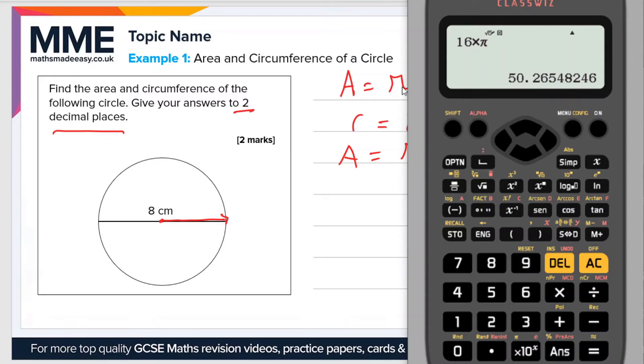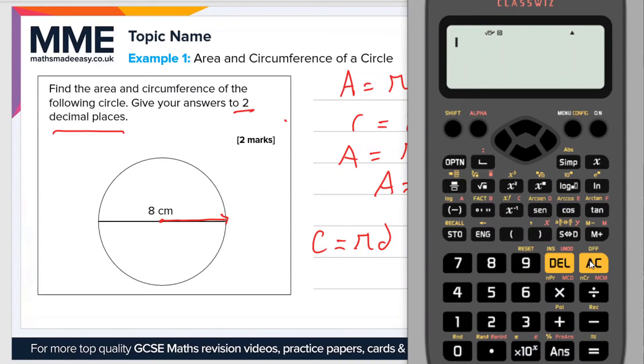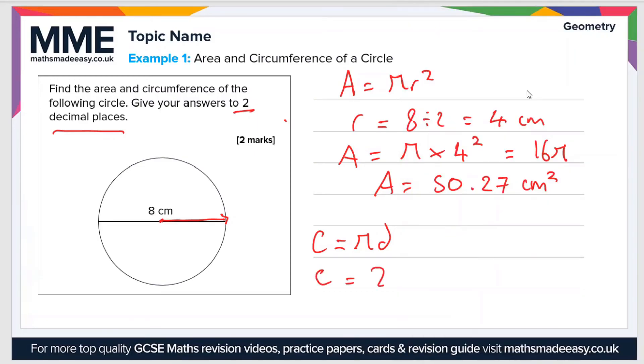And then the circumference is just C equals pi d. We have d, that's 8 centimeters. So if we go back to our calculator, then let's do 8 times pi equals 25.13. So C equals 25.13 centimeters.